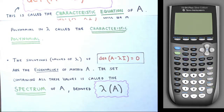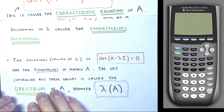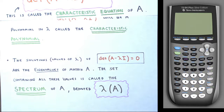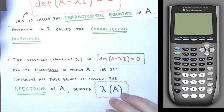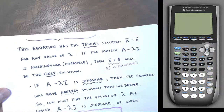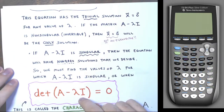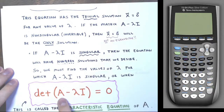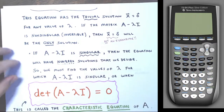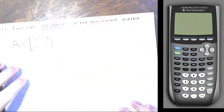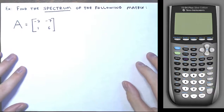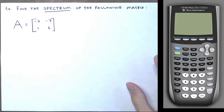Now let me get into some examples where I'm asked to find the spectrum of a matrix — the set of all eigenvalues, or all solutions of the characteristic equation det(A − λI) = 0. I have a couple of 2×2 matrices and a couple of 3×3 matrices. The larger the matrix, the more tedious the problem becomes.